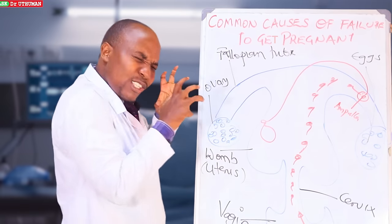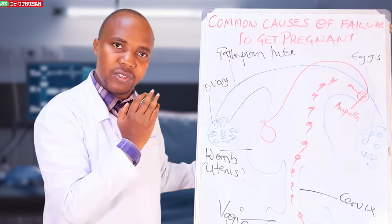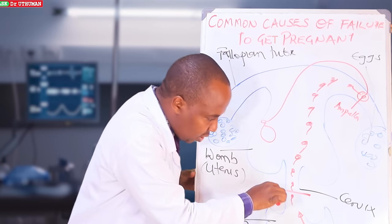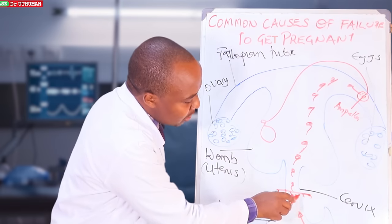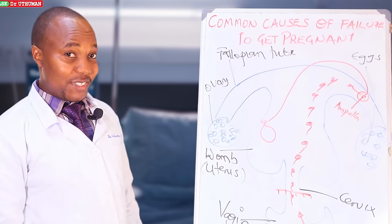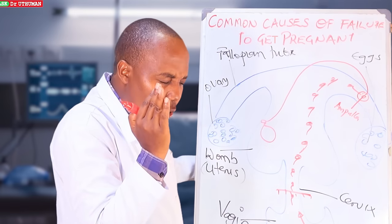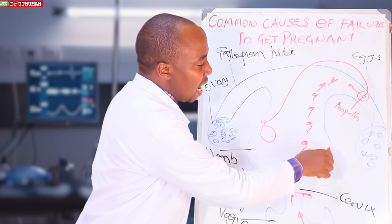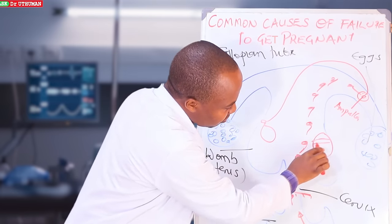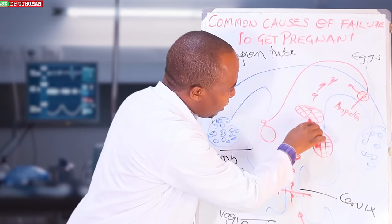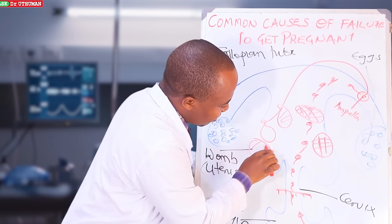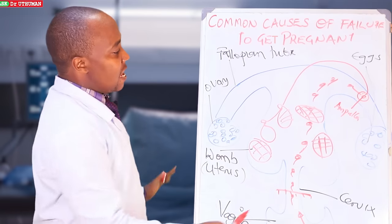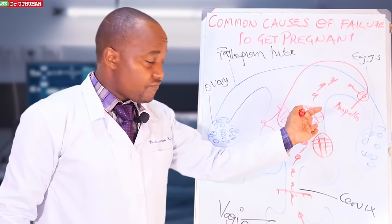Which structural abnormalities can prevent a woman from conceiving? You may find that your cervix is blocked. If this cervix is blocked, sperms will not be able to enter. What about the uterus? The cervix may be okay, but you find that the uterus has fibroids, masses, polyps. Will the sperms be able to swim? No. They will be obstructed by the fibroids, the masses.